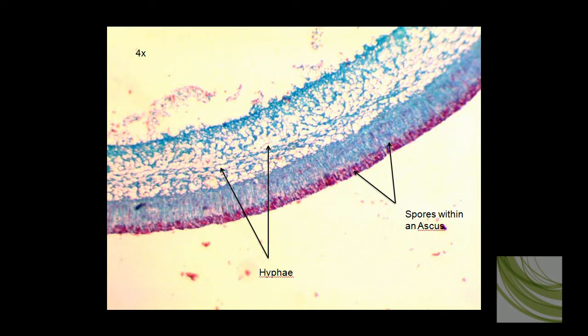Here is the slide of Peziza showing some hyphae, and on the edge we can see this dark purple band. These are the spores, and they are all contained within little cells called asci.